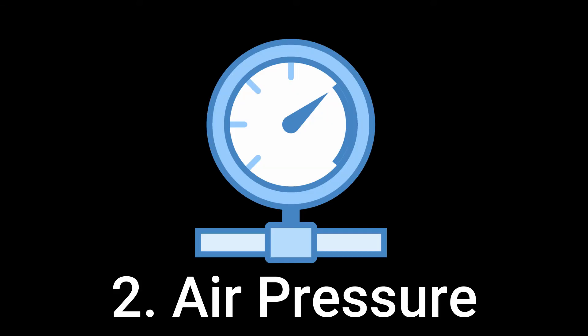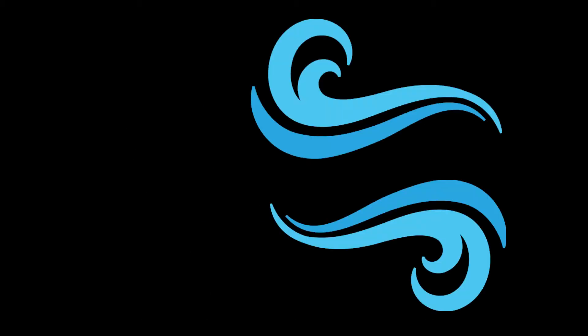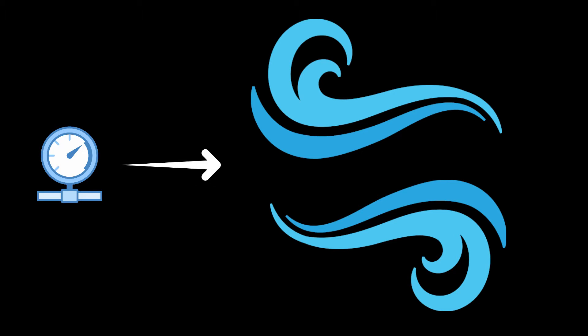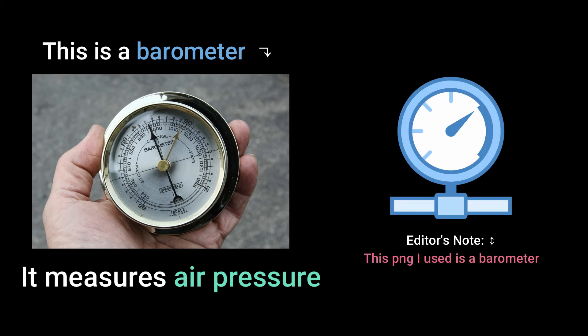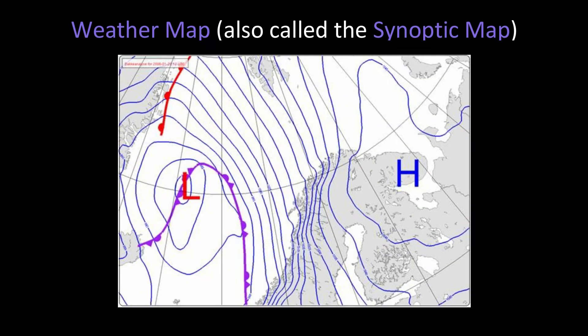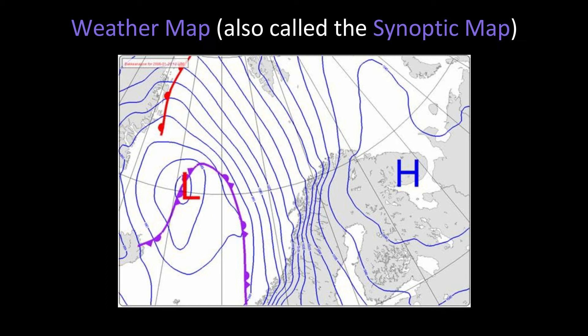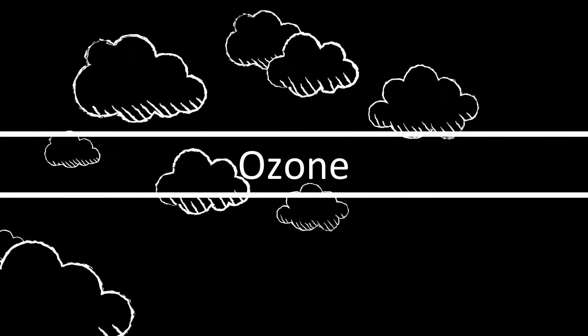Another essential element is air pressure, especially when talking about changing or creating atmospheric conditions. Air pressure is the result of the pressure created by the weight of the air in the Earth's atmosphere — it is the weight of the air resting on the Earth's surface. This is also called barometric pressure, named after the instrument used to measure it. Pressure is shown on a weather map, often called a synoptic map, with lines called isobars.